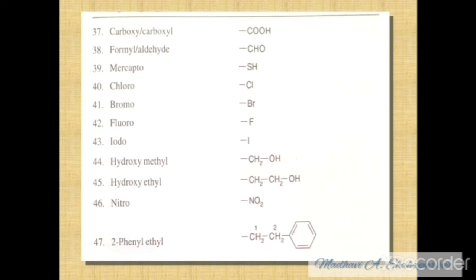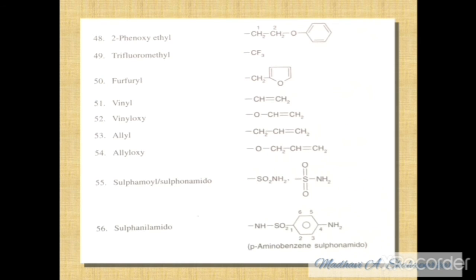Hydroxy OH, carboxy or carboxyl COOH, formyl or aldehyde CHO, mercapto SH, chloro Cl, bromo Br, fluoro F, iodine I, hydroxymethyl CH2OH, hydroxymethyl CS2, nitro NO2, 2-phenylethyl, phenoxyethyl, trifluoromethyl, furfural, vinyl CH=CH2, vinyloxy, allyl, allyloxy, sulfamoyl or sulfonamido SO2NH2, and sulfanilamido — phenyl ring with benzene ring, NH2 attached at the fourth position and at the first position SO2NH — chemical name: para-aminobenzene sulfonamido. OK, chapter 3.